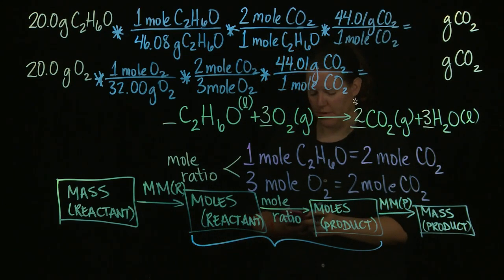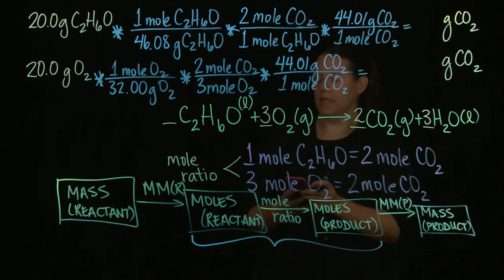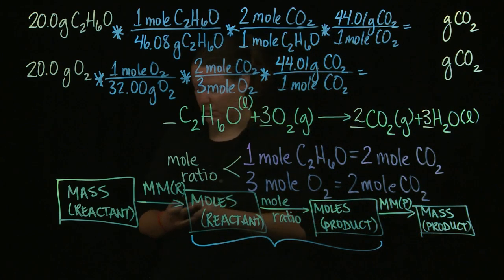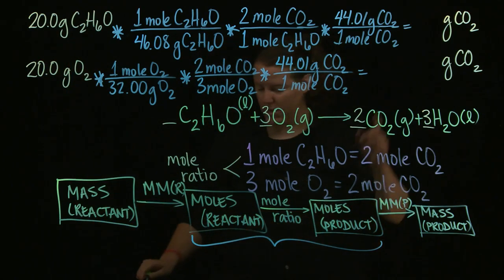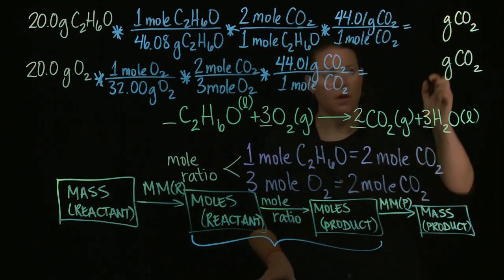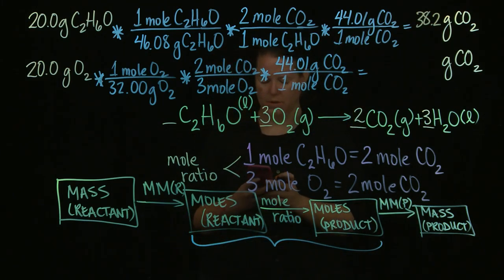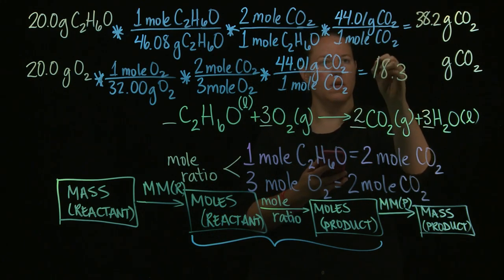And now I'm using my phone. Should have brought a calculator. Handy dandy, but not in a test. You can't do it in a test. Here's my handy dandy calculator on my phone. And for the first one, I get a number like 38.2. That's all I'm going to do because it's three significant figures. Three significant figures there, that means I should have three significant figures in the end. 38.2. And then I need to do the other one as well. 20 divided by 32 times 2 divided by 3 times 44.01 gives me 18.3.